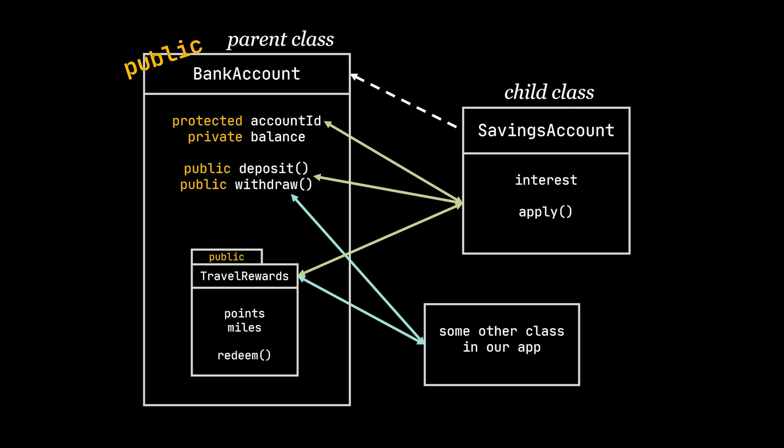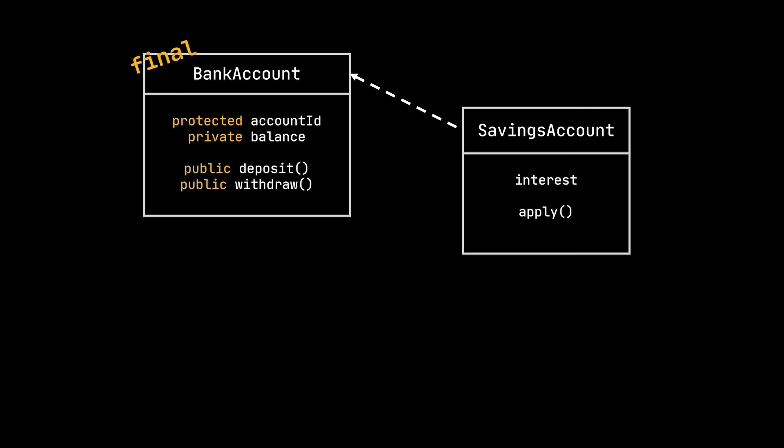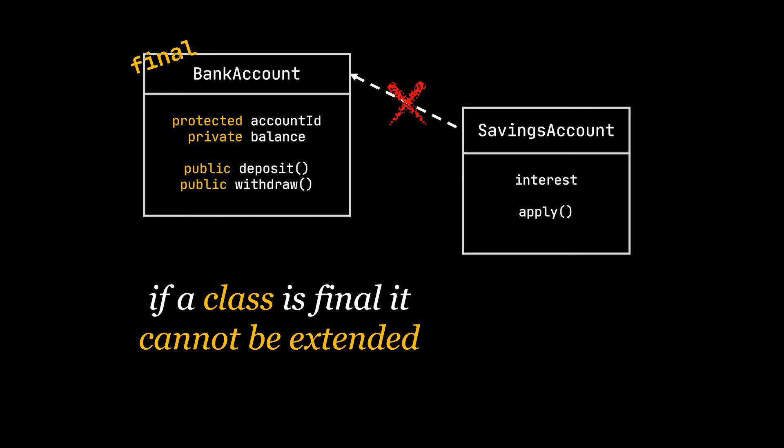Now what about the final keyword? When this keyword is applied to a class, it makes it impossible to extend this class. So if our BankAccount class was final, we wouldn't be able to create the SavingsAccount class and inherit our BankAccount class properties. And when applied to a method, it prevents this method from being overridden in a subclass.